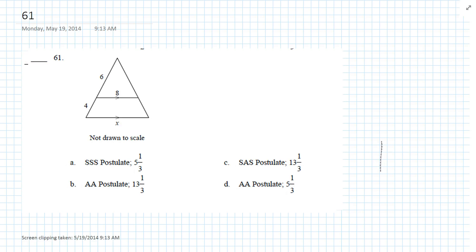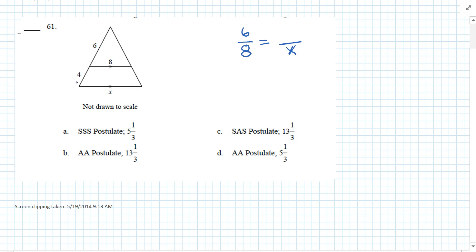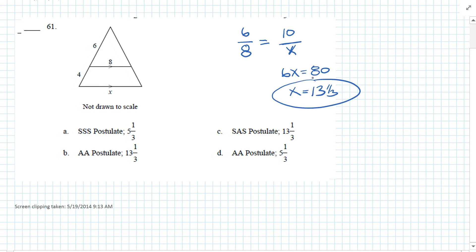Question 61: We know we have similar triangles by angle-angle. The base of the small triangle is 8 and the side length is 6. So we say 6 is to 8 as — what's the base of the big triangle? X. What's the length of the big triangle? 4 plus 6, so 10. We cross multiply: 6X equals 80. Divide each side by 6: X equals 13 and 1 third. Proved by angle-angle. 13 and 1 third. Answer for 61 is B.